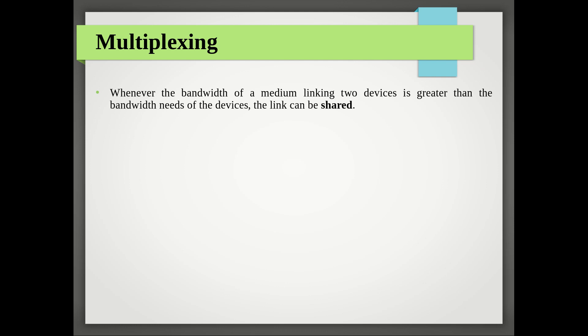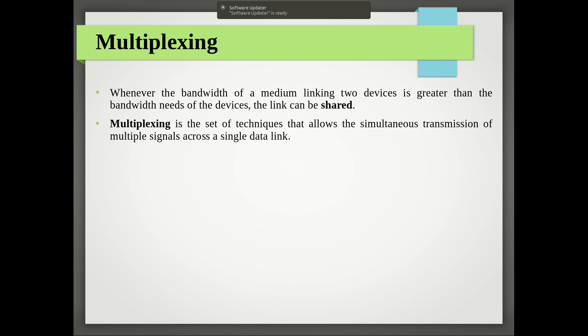The goal is to efficiently share resources - to improve the efficient use of resources allocated in a given communication system. Multiplexing is the set of techniques that allows the simultaneous transmission of multiple signals across a data link. The common medium is shared by a number of connected devices, and the set of techniques used for that falls under the terminology 'multiplexing.'